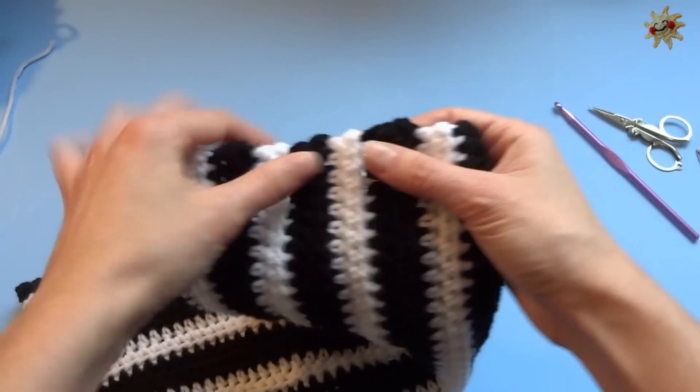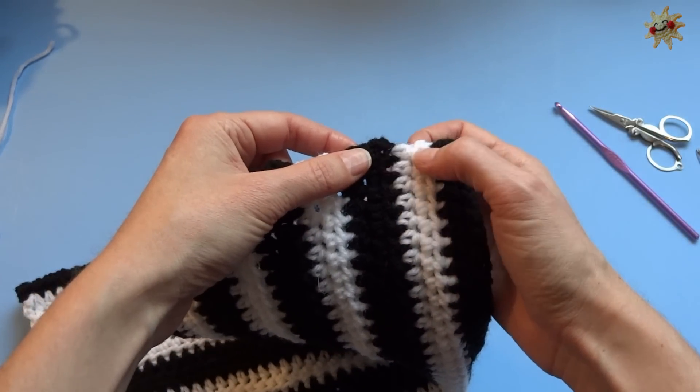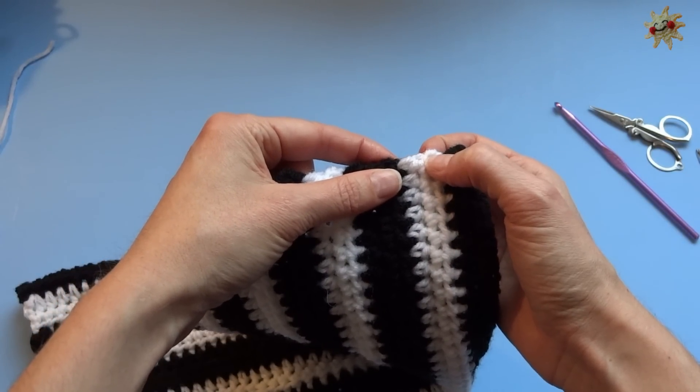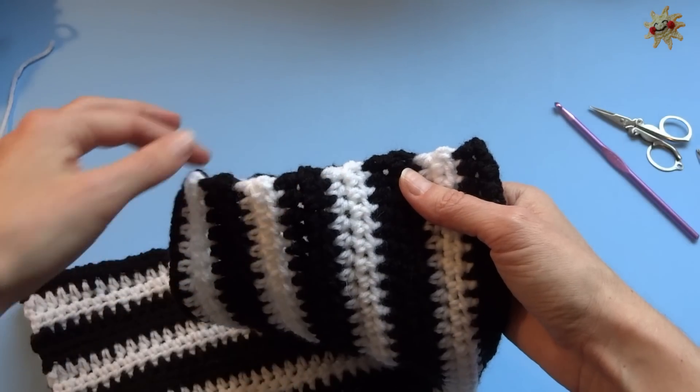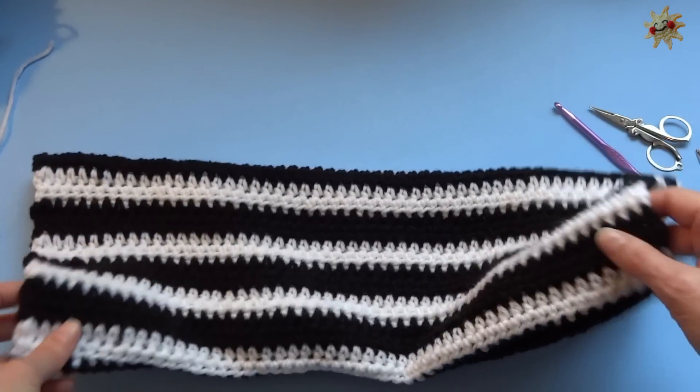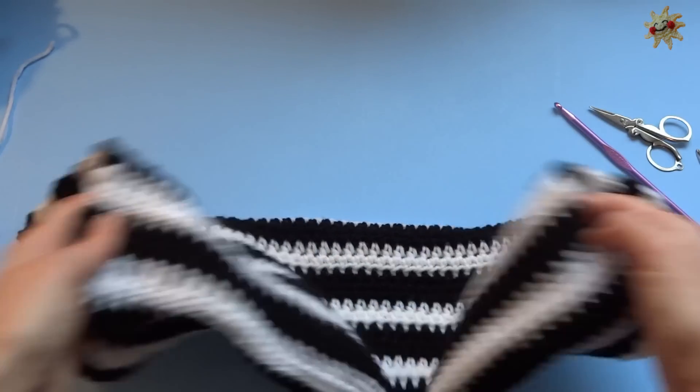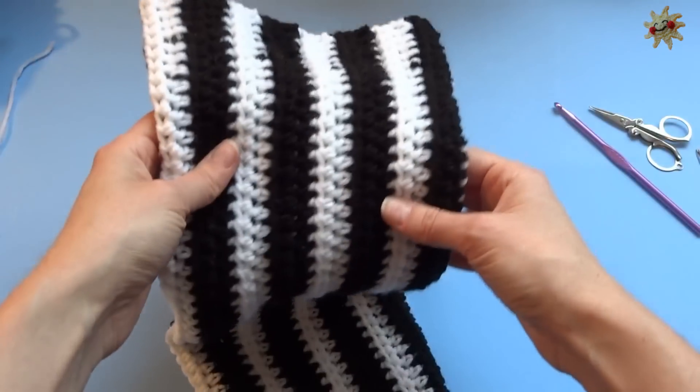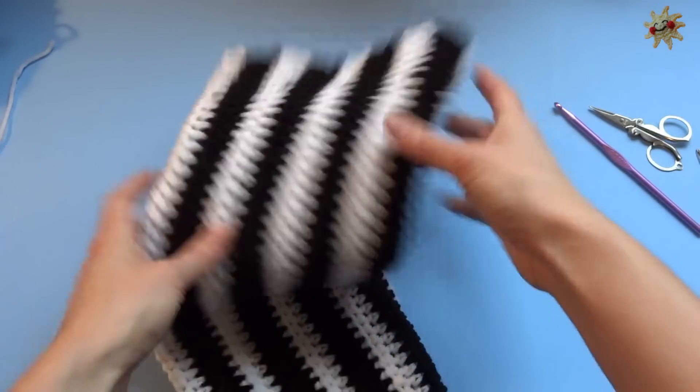Or you can go ahead and pick a color, join with a slip stitch or a single crochet, and simply single crochet in the end of every single row all the way around. So you can finish it that way too. I kind of like this sort of wobbly unfinished edge because these are sort of supposed to be kind of funky. So I'm going to stick with just the unfinished top and bottom edges.